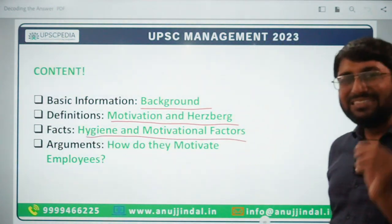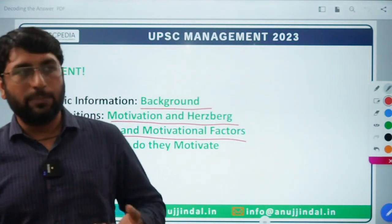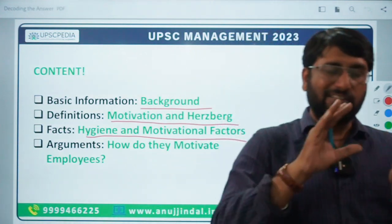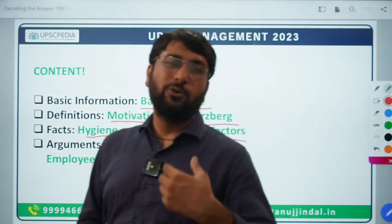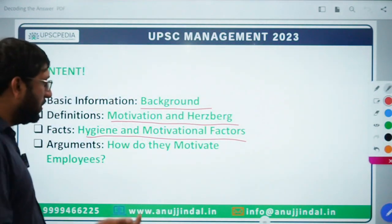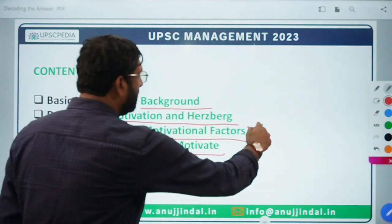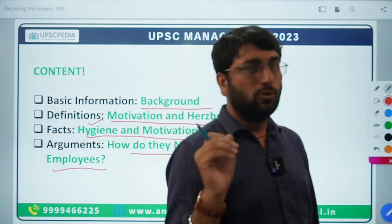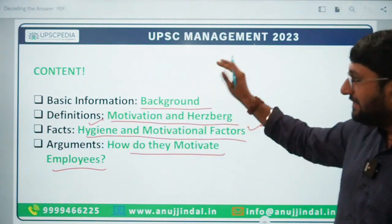Next you will talk about the facts — where you will define and explain hygiene and motivational factors. What are hygiene factors? Why are they called dissatisfiers? Explain the satisfaction and dissatisfaction concept. Then explain motivational factors — what are these factors and how are they going to motivate? The last content element is the argument you need to give for the second part of the question: how are these hygiene and motivational factors going to motivate the employees? This is your final argument in the conclusion.